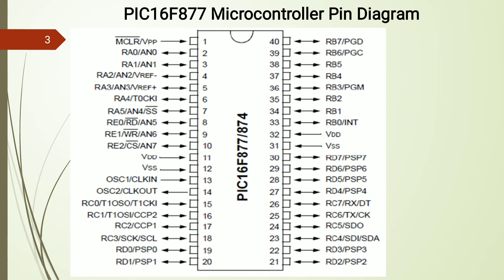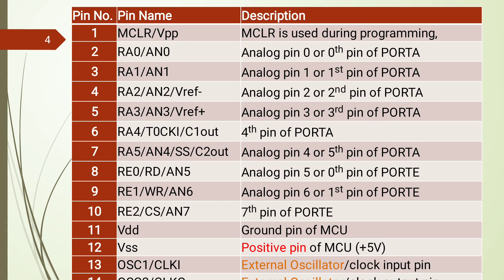Looking at the pin function table: pin 1 is MCLR, used during programming or reset. Pins RA0 through RA3 serve as analog inputs AN0 to AN3. Pin RA4 is the Timer 0 clock input T0CKI, which is used to provide an external clock to the controller for generating timing pulses or event counting.